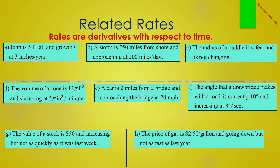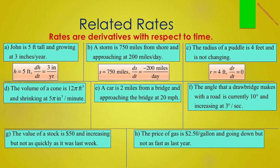We see eight statements that give mathematical information. We need to write these as equations with proper variables. It is important that we label the units as well. In A, John is 5 feet tall and growing at 3 inches per year. I choose H to represent John's height, and therefore H is 5 feet, and DH/dt is 3 inches per year.